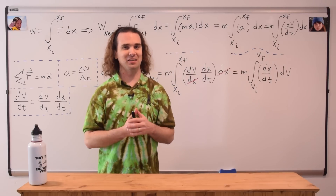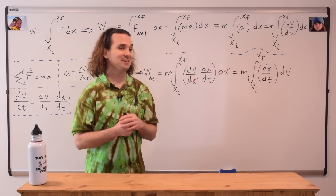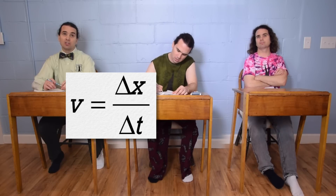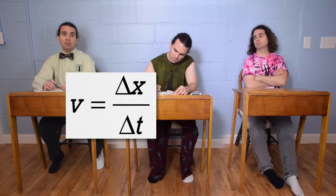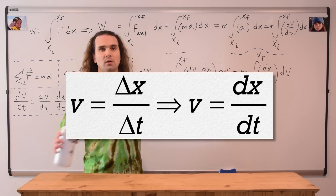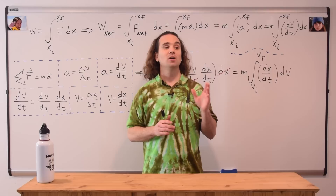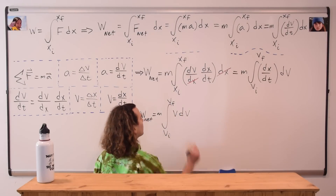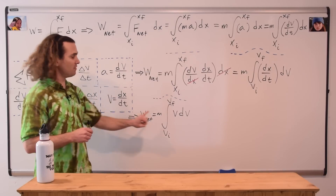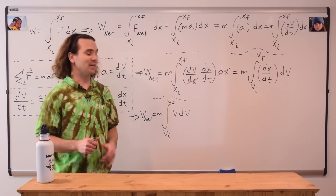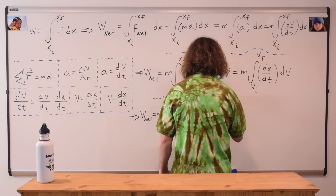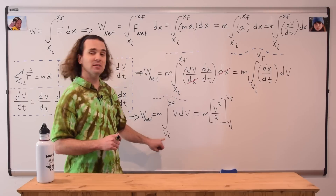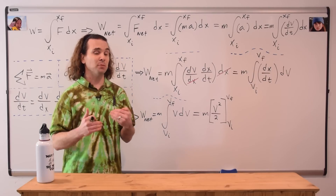We are almost there — we can almost take the integral. What is the equation for velocity? Velocity is change in position over change in time. However, we need the calculus version of instantaneous velocity, which is the derivative of position with respect to time. We can substitute velocity in for the derivative of position with respect to time. And now we can finally take the integral. The integral of velocity with respect to velocity is velocity squared divided by two, and we retain those limits from initial velocity to final velocity. We can now plug in those limits.